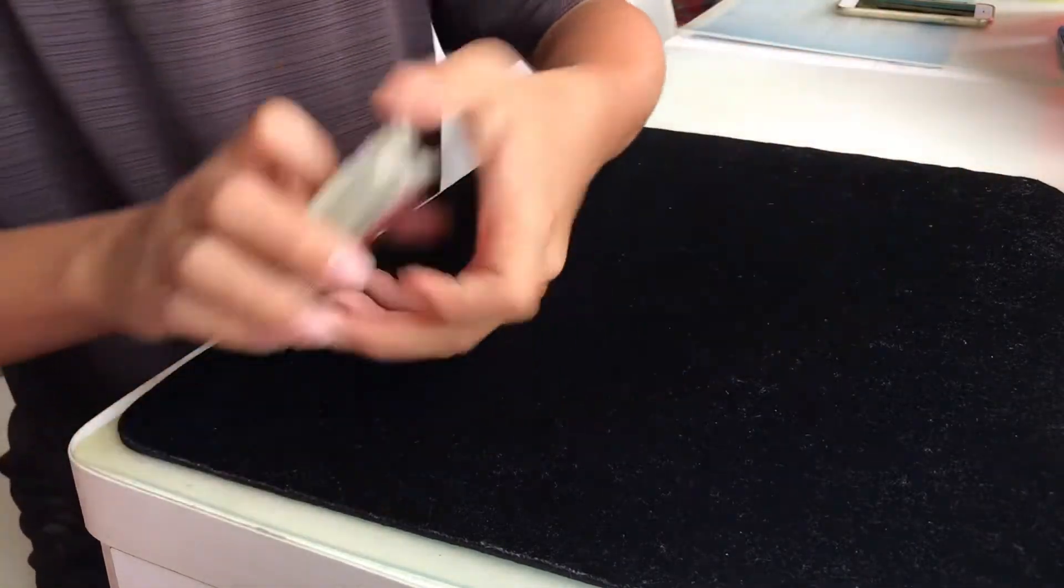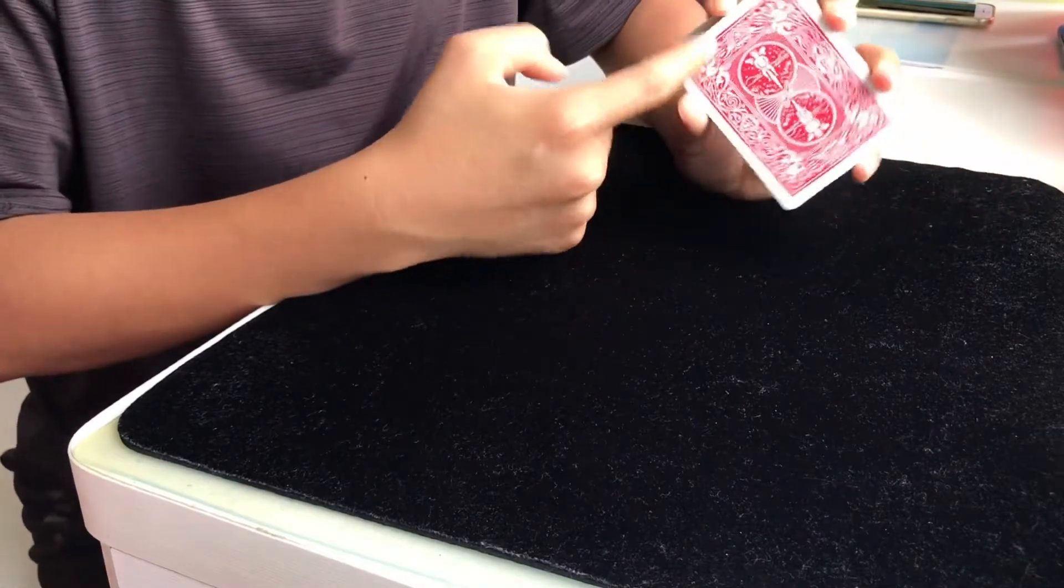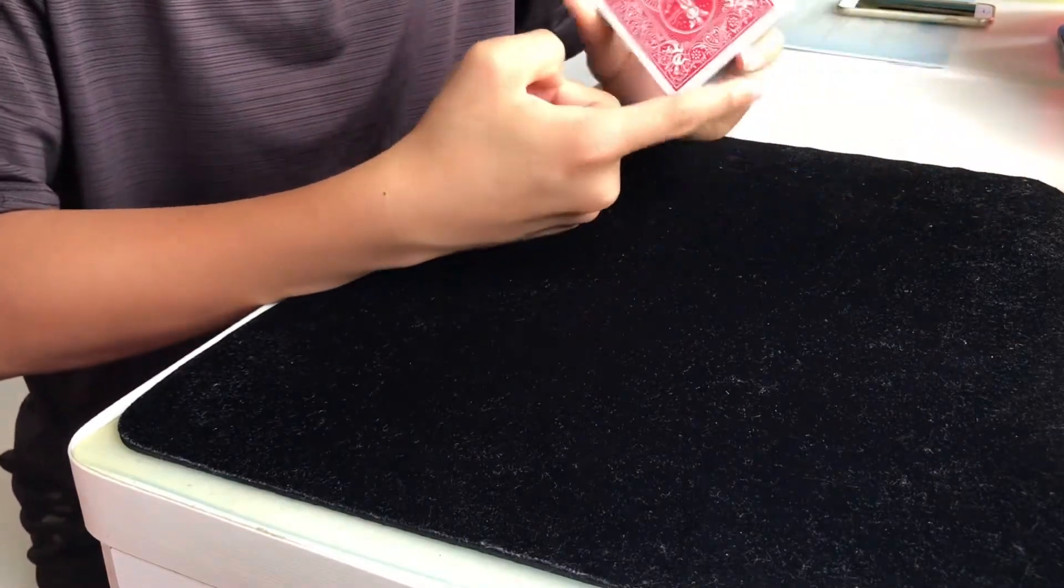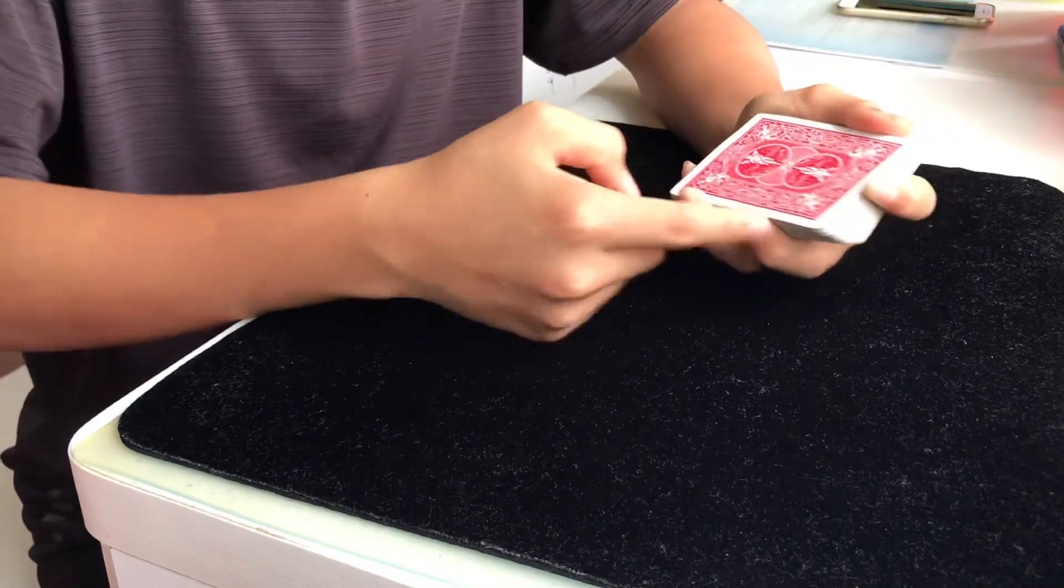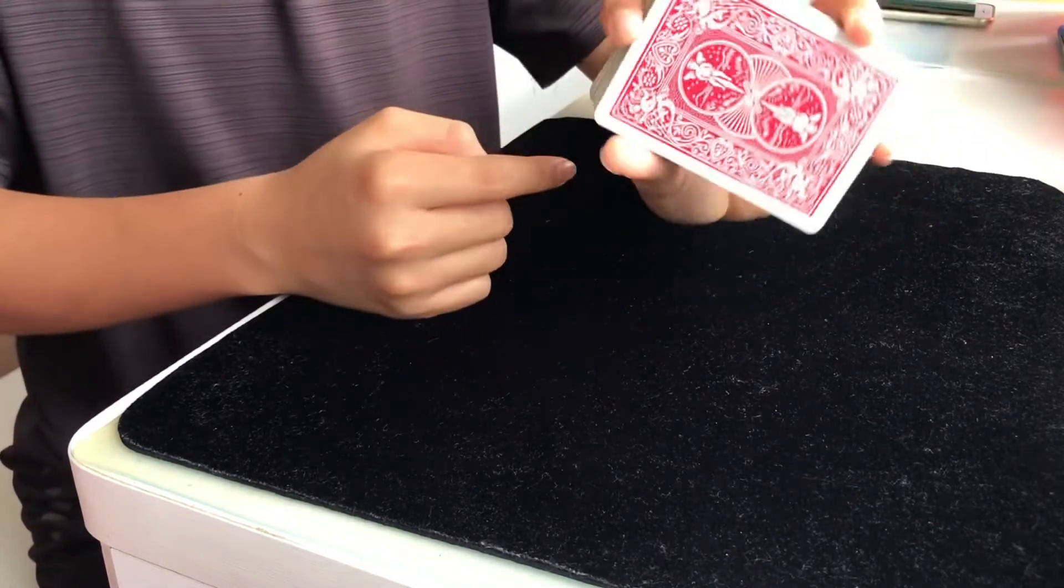You want to hold the deck in a straddle grip like this: pinky at the bottom, four fingers on the side, and the middle finger and index and the thumb by the side here. This is a straddle grip. This is a mechanic grip.